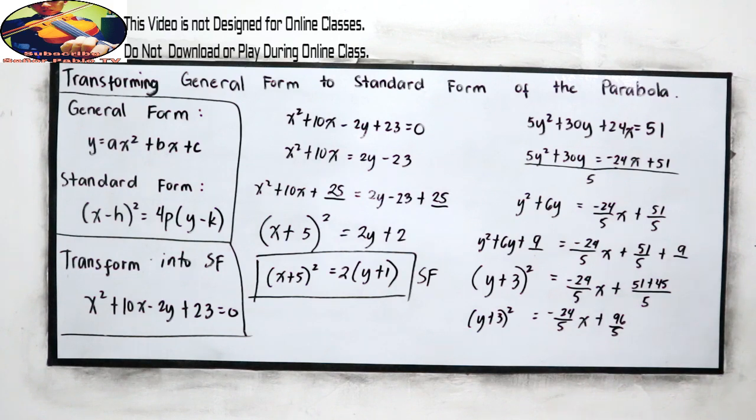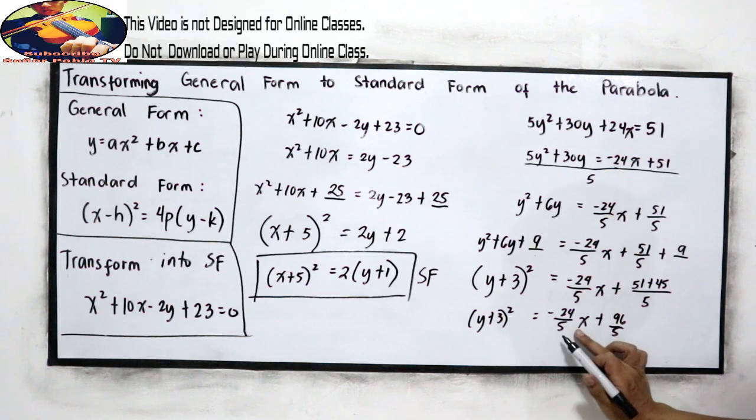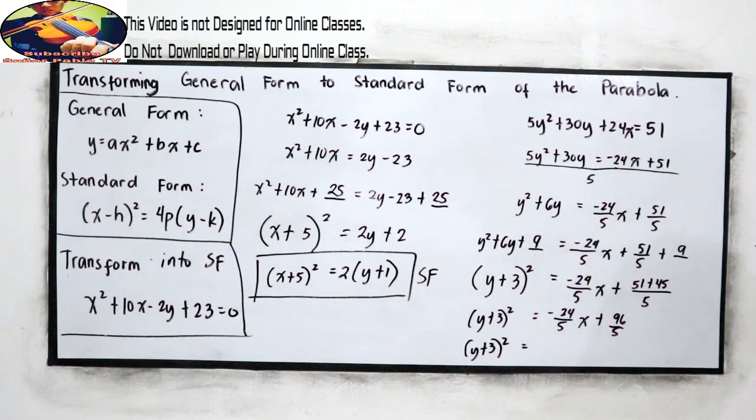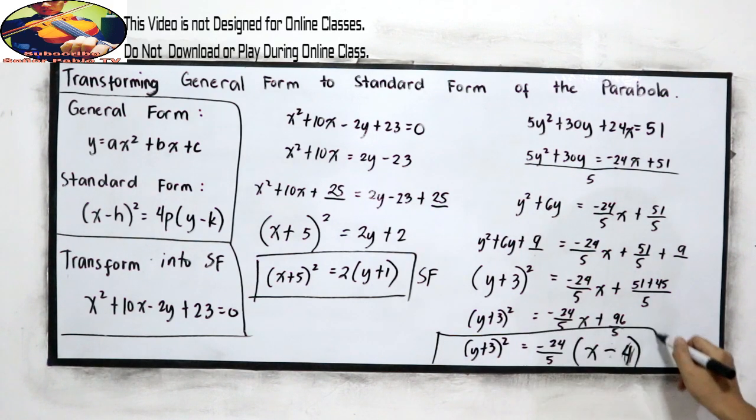And now, we have the common factor. So copy, y plus 3 raised to 2 equals, the common factor is negative 24 over 5. So we have now x plus 96 divided by negative 24. Since we have negative here, this will become negative. Because negative times negative will give us positive. 96 divided by 24, that is 4 over 1 or simply 4.